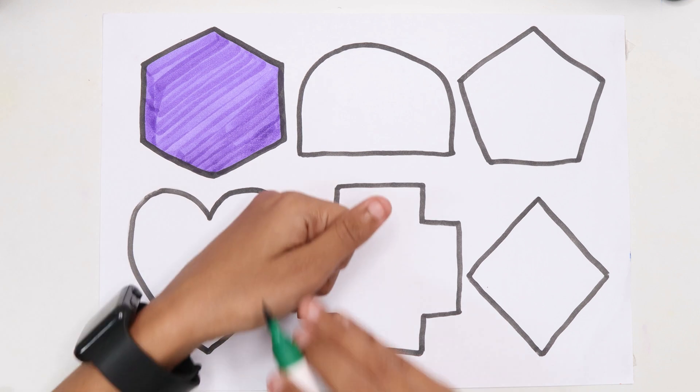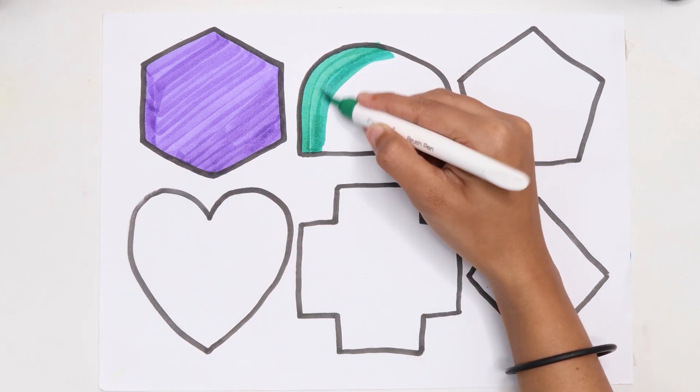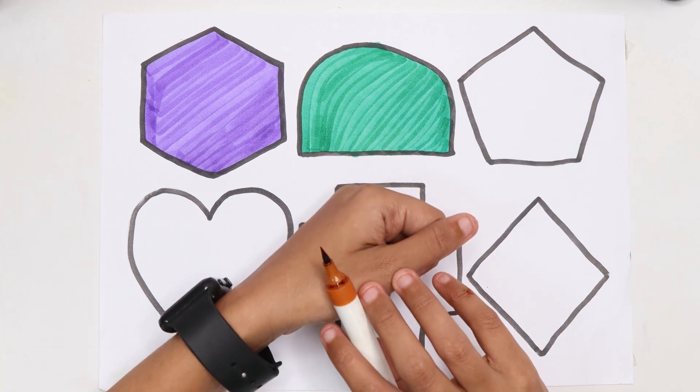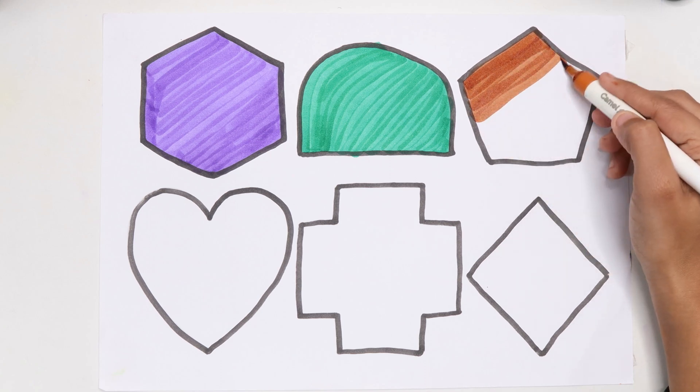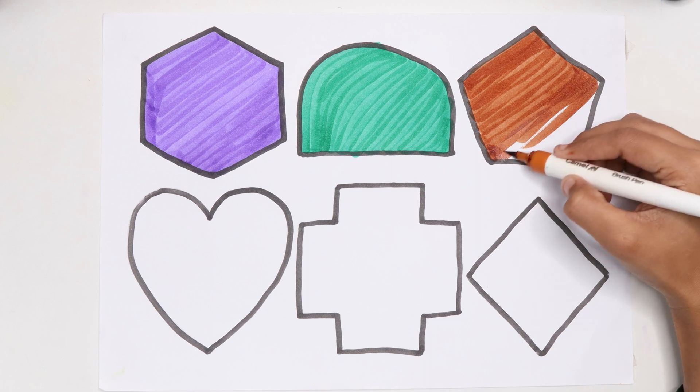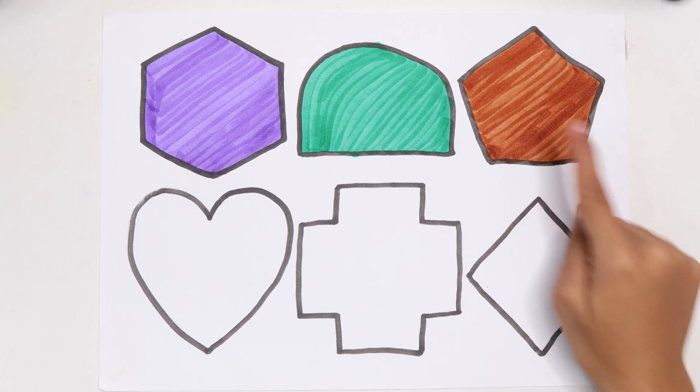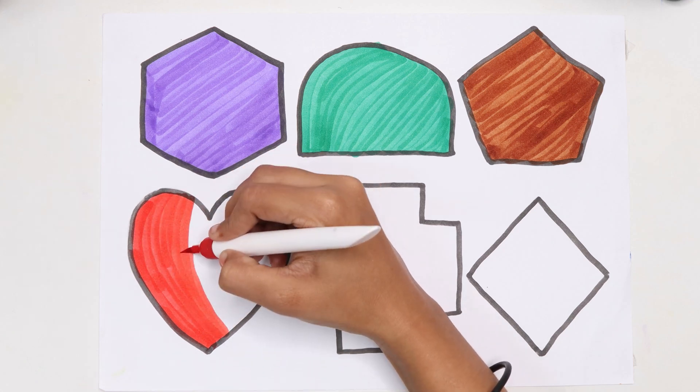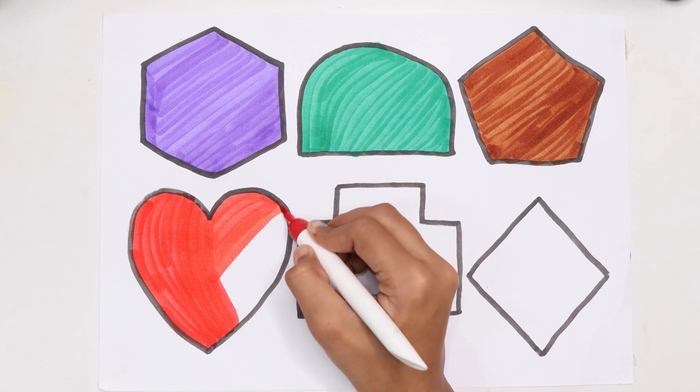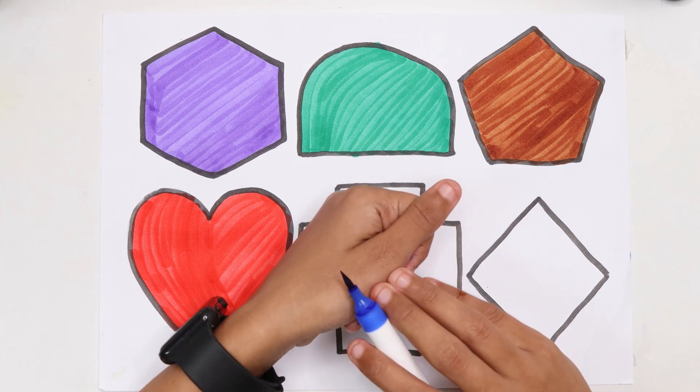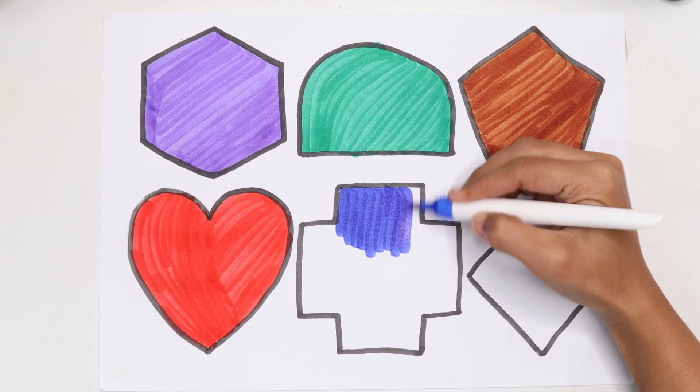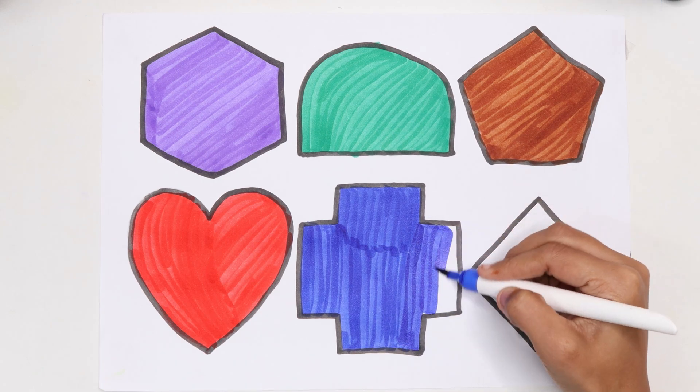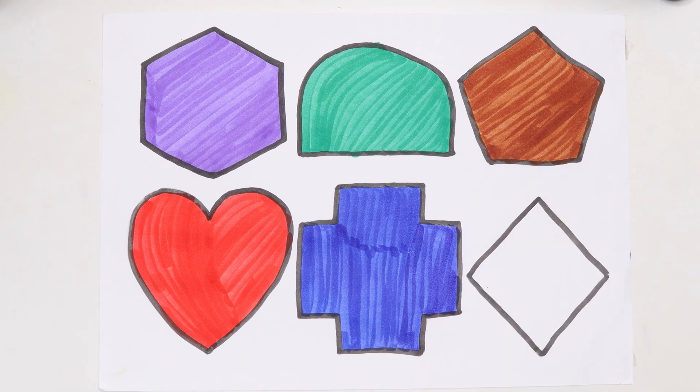Violet hexagon. Dark green color. Semi-circle, brown color. Pentagon, red color. Heart. Cross, orange color.